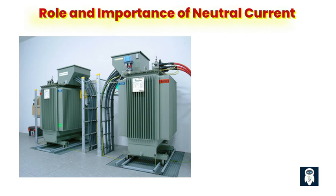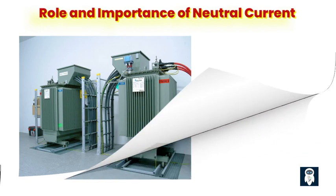In a three-phase electrical system, the neutral point acts as a reference point for the flow of current, ensuring that the difference in currents between the three phases is balanced. The neutral point is typically connected to ground to provide a stable reference potential. Neutral current plays a vital role in balancing currents, helping prevent voltage imbalances, reducing disturbances, and ensuring reliable operation of electrical equipment by allowing the return of unbalanced currents through the neutral wire.